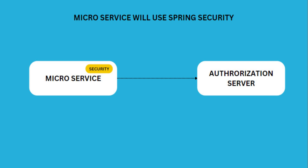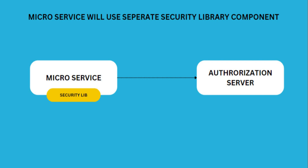This is the first way, which I will be explaining in this video. On subsequent videos I will explain the rest of the methods. The second method is: we make a separate security library — a security JAR — and on each microservice we include and use that JAR.